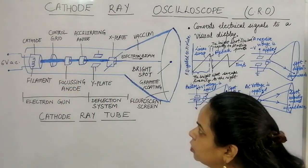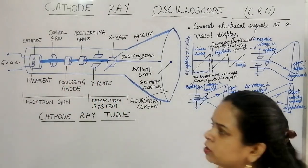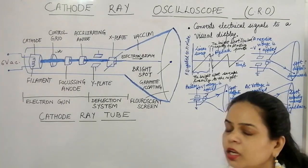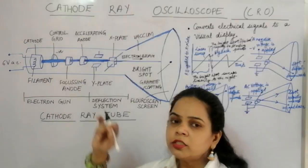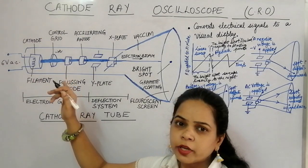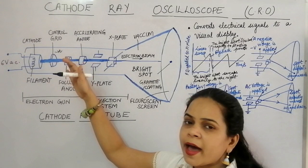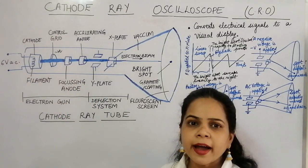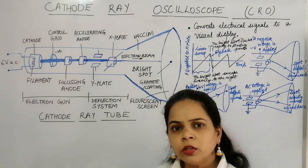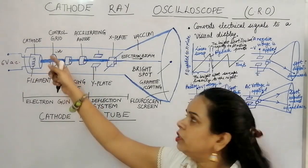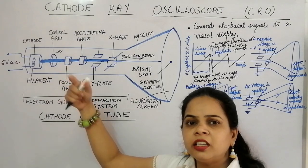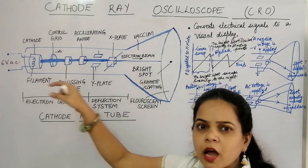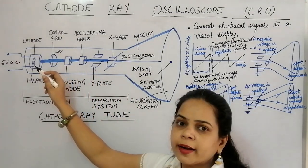There is a cylindrical disc called the control grid, placed at a higher negative potential than the cathode. Since electrons are negatively charged and the control grid is also at a negative potential, by increasing the negative voltage on the control grid we can limit the number of electrons. This allows us to control the intensity of the electron beam — increasing negative voltage reduces beam intensity.